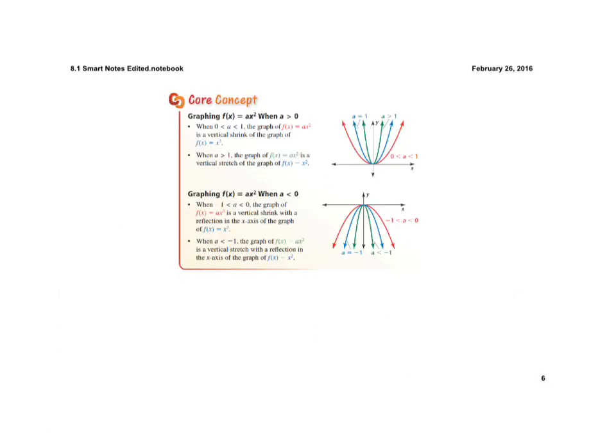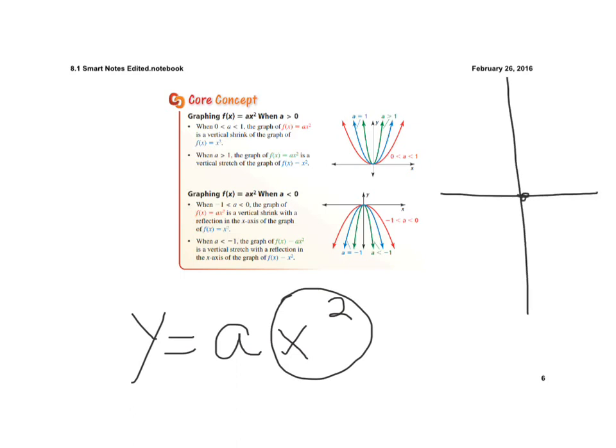Now here we're going to look at y equals a times x squared. Remember, just x squared is the very first problem that we looked at. It has a vertex right here at zero zero. If I plug one in, one squared is one. I plug two in, two squared is four. And then because it's symmetrical, I know these points over here. Now I have that graph, and this is just y equals x squared.